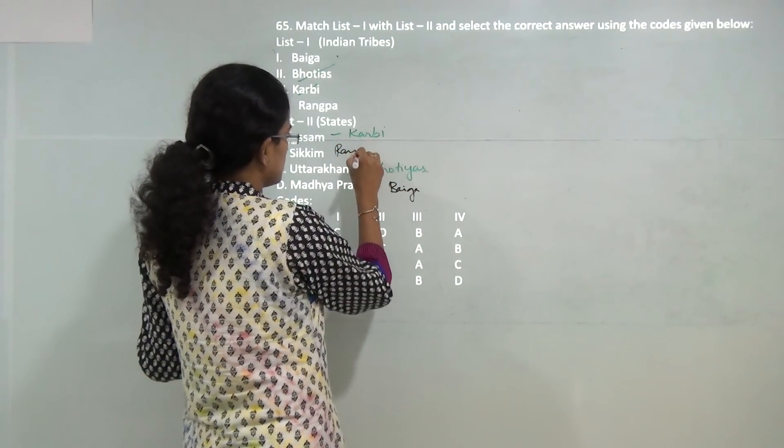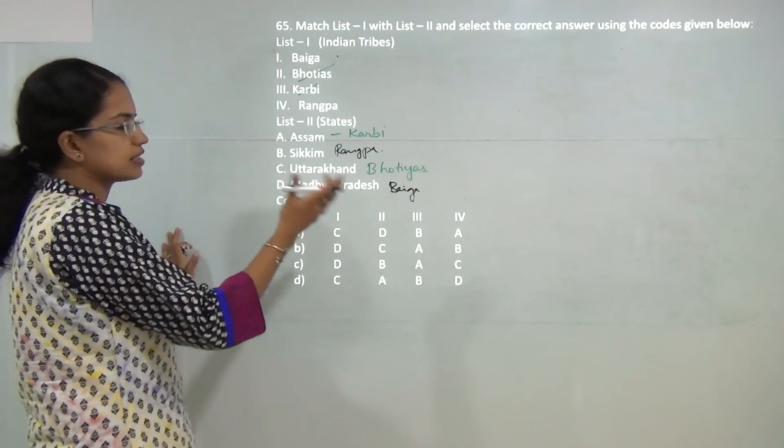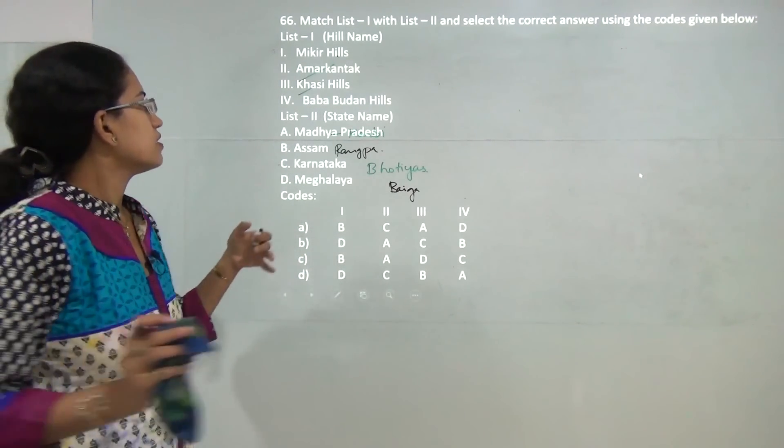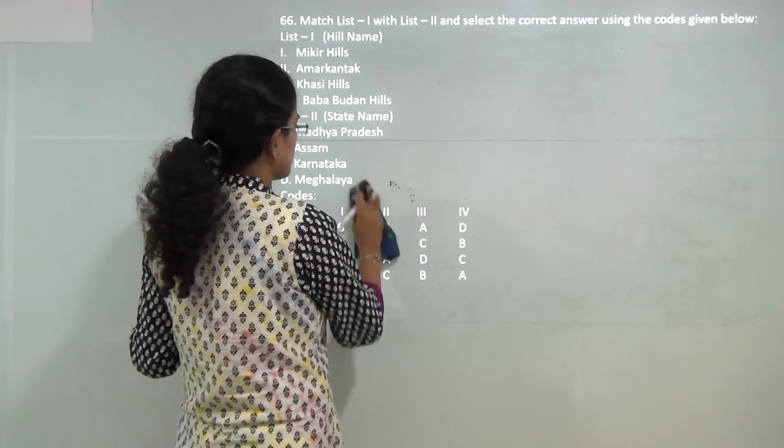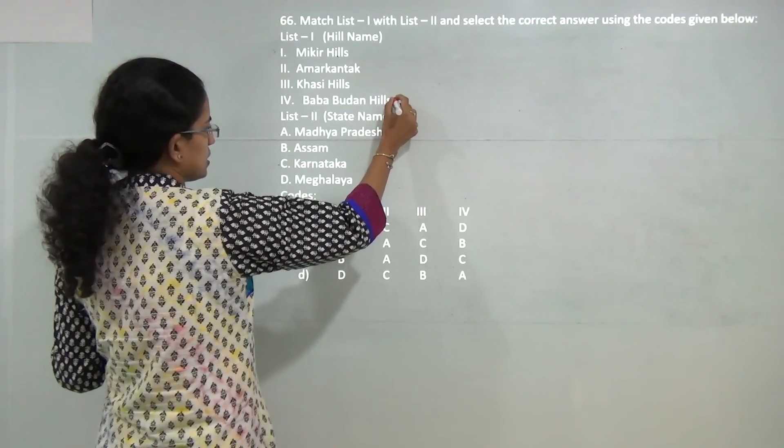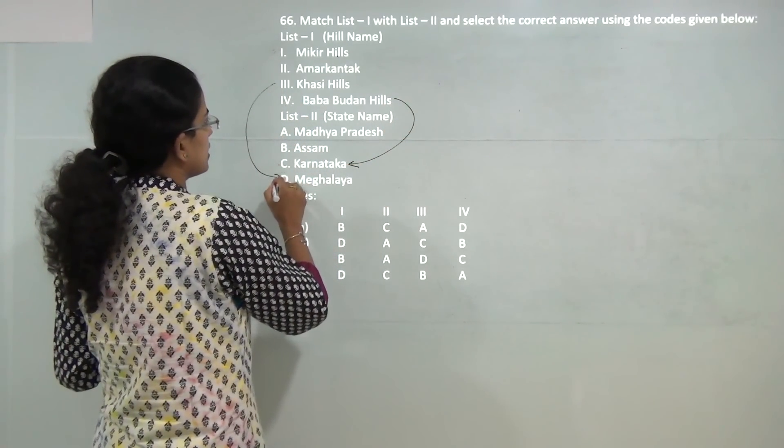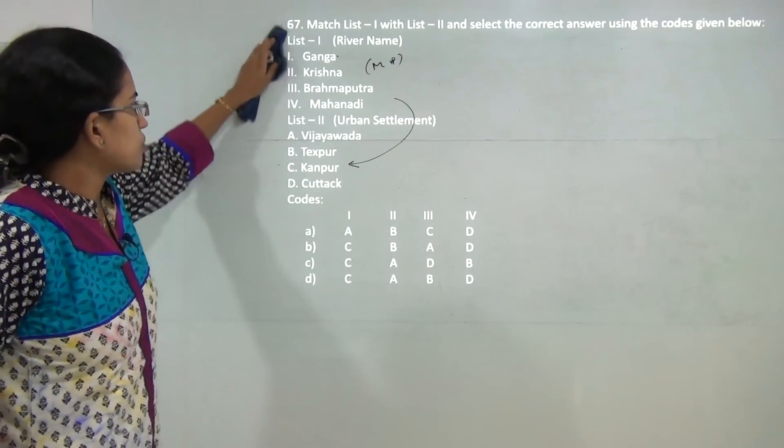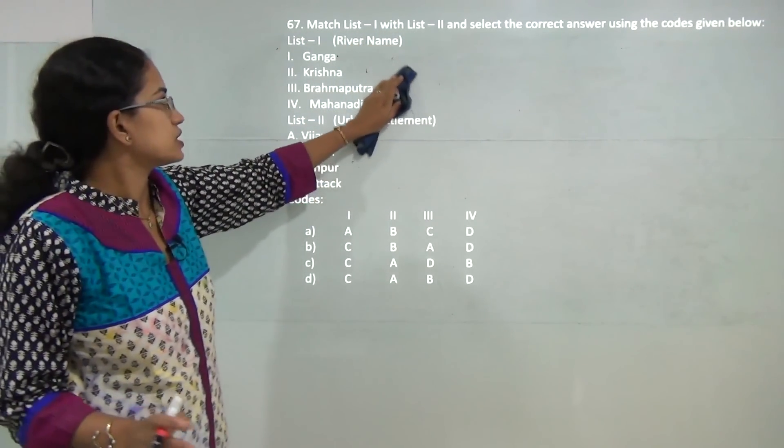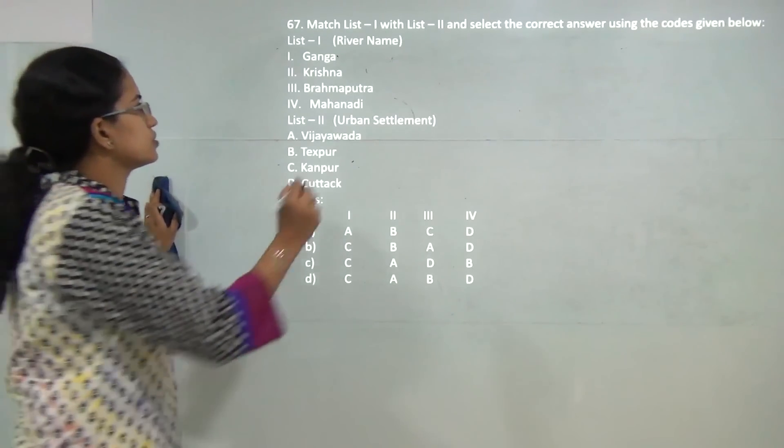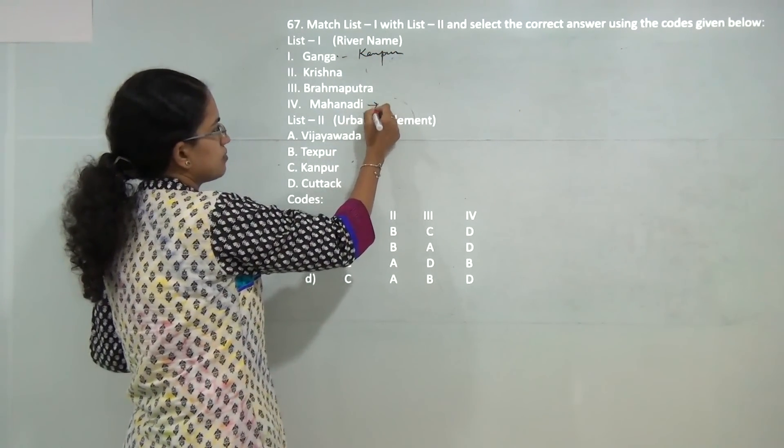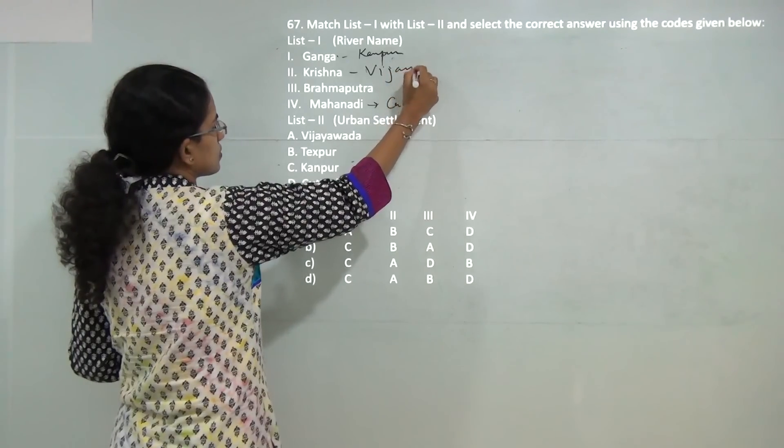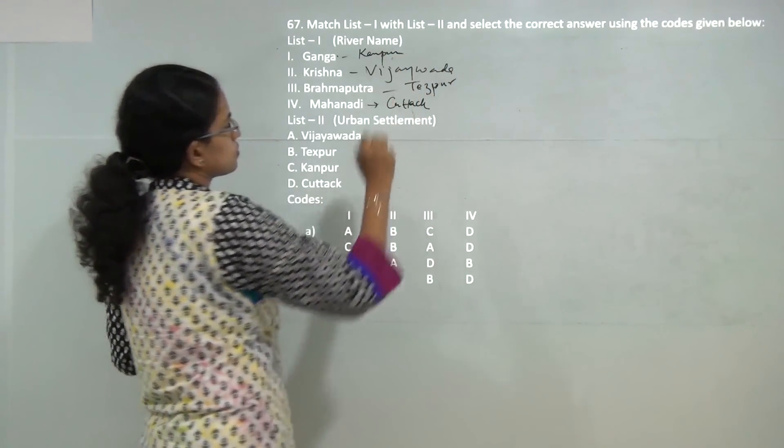If you go through the postal codes thoroughly, you will have the complete list and can simply memorize those. Which hills are located in which area? If you are familiar with the map nicely, you can say Babadudin hills are located in Karnataka, Khasi hills in Meghalaya, Mikir hills in Assam, and Amarkantak in Madhya Pradesh. Next, if you know which river flows in which region, you can answer this correctly. Ganga flows through Kanpur, Mahanadi flows through Cuttack in Odisha, Vijayawada is located on Krishna River, and Brahmaputra flows through Tezpur in Assam.